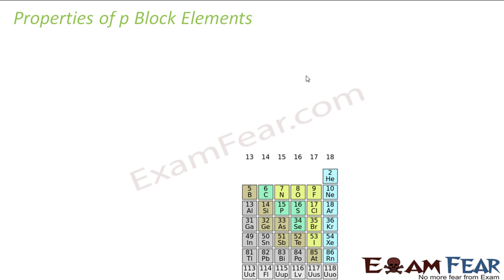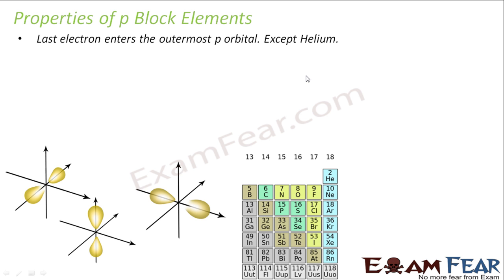Now we'll talk about some of the properties of the P block elements. The last electron enters the outermost P orbital. That is something we have seen. We have defined the P block element as the element with the last electron entering the outermost P orbital. Helium is the exception here.